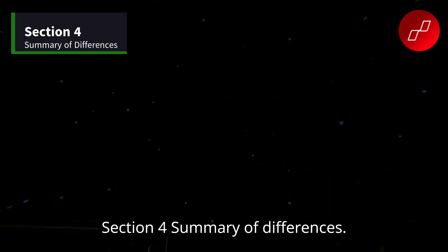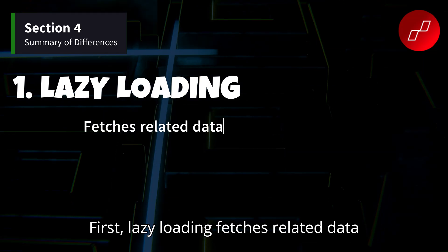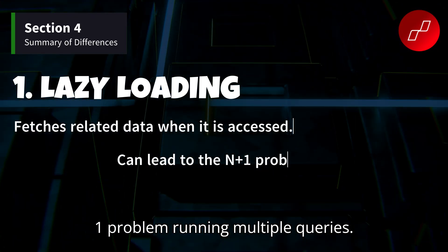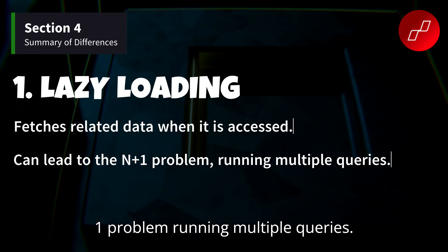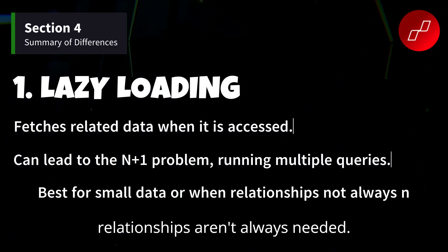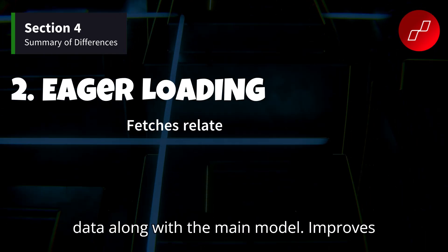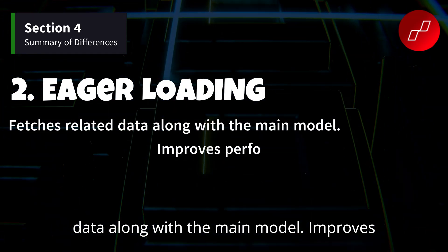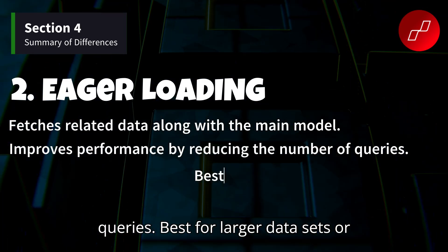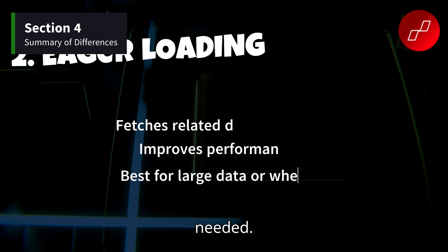Section four: Summary of differences. First, lazy loading — fetches related data when it is accessed, can lead to the N+1 problem running multiple queries, and is best for small datasets or when relationships aren't always needed. Second, eager loading — fetches related data along with the main model, improves performance by reducing the number of queries, and is best for larger datasets or when you know the related data will be needed.